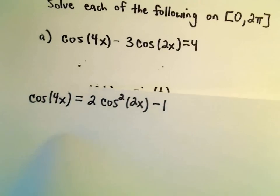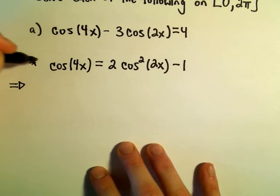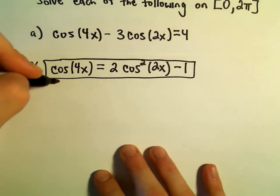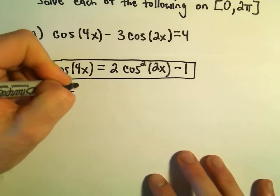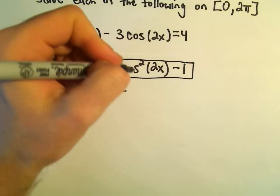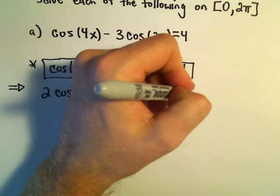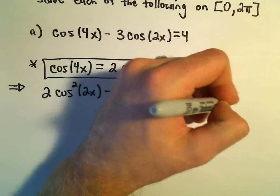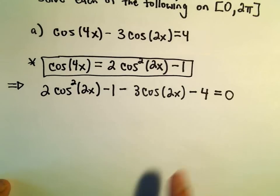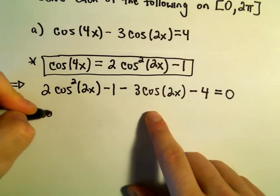Alright, so we'll just fill that in. So here's our identity that we're using. So it says cosine of 4x, I'm going to write 2 cosine squared of 2x minus 1. And then we still have our minus 3 cosine of 2x. What I'm going to do is subtract the 4 over to the left side as well. Because in general, to solve equations, what you simply try to do is make one side 0 and factor. So hopefully this will factor somewhat nicely.